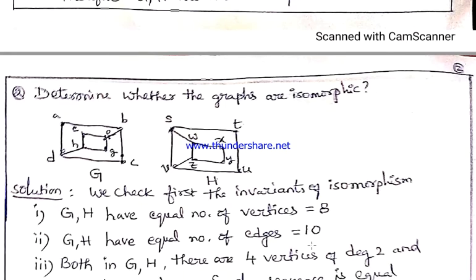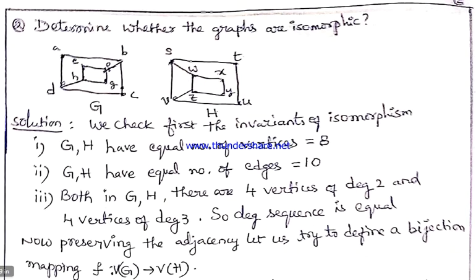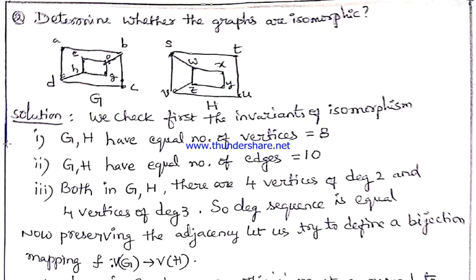Now coming to the second example: determine whether the graphs are isomorphic. We first check whether the invariants are satisfied. We can clearly view from the two graphs that they have the same number of vertices equal to 8, same number of edges equal to 10. The degree sequence is also equal, because in both graphs G and H there are four vertices of degree 2 and four vertices of degree 3. So the three invariants are satisfied by the two graphs. Even then we cannot say that the two graphs are isomorphic.